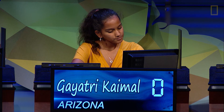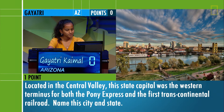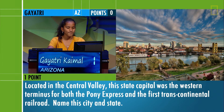Gayatri. Located in the Central Valley, this state capital was the western terminus for both the Pony Express and the first transcontinental railroad. Name this city and state. Sacramento, California. You got it.